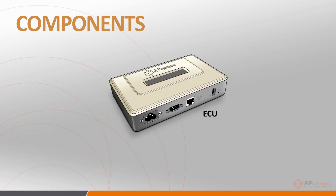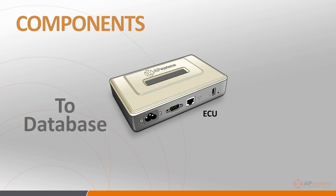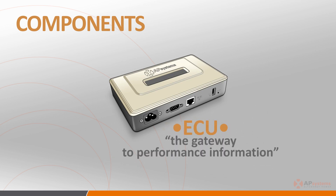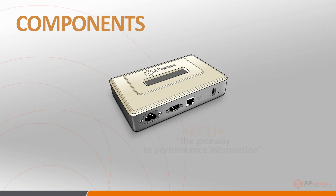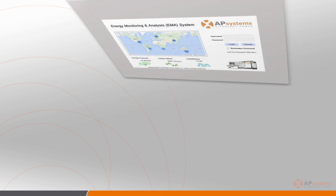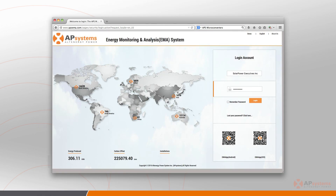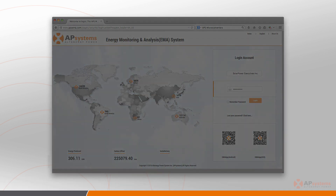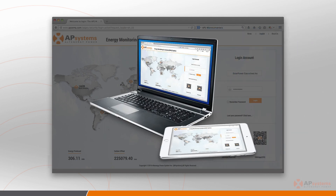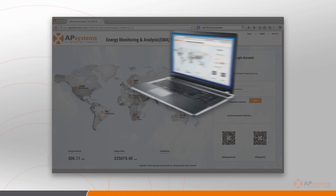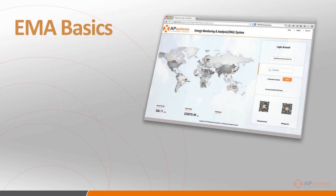The ECU collects and stores the performance data from each of the microinverters and sends it to the AP Systems database so that the array can be monitored via the internet. The ECU, while optional, is an essential component of the remote monitoring system that should be thought of as the gateway to the performance information that can be retrieved from each inverter and its assigned PV modules. The Energy Monitoring and Analysis, or EMA website, allows for 24/7 management and monitoring of the solar array via any web-enabled device, such as an internet-connected computer, tablet, or smartphone. The EMA functionality is covered in depth in another training session.